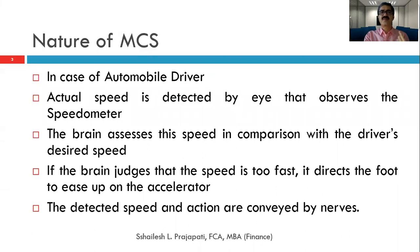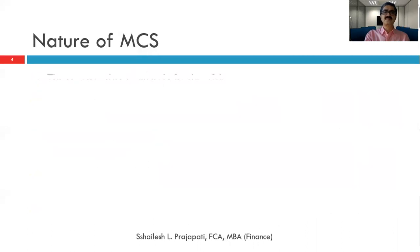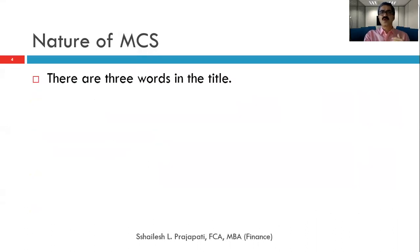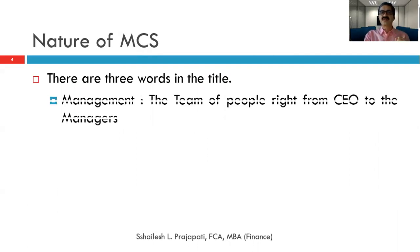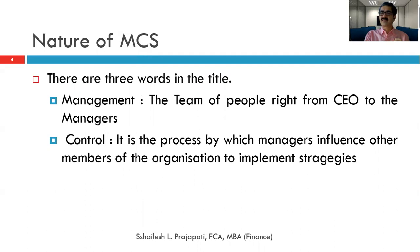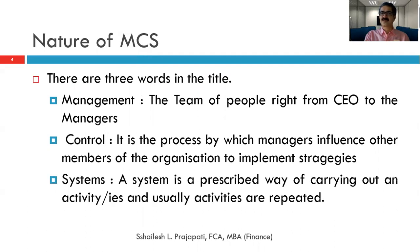This all forms a control system in terms of automobile travel. What is the nature of MCS? There are three words in the title: management, control, and systems. Management is about directing; control is the process by which managers influence other members of the organization; and systems refers to the framework within which the controls are managed.